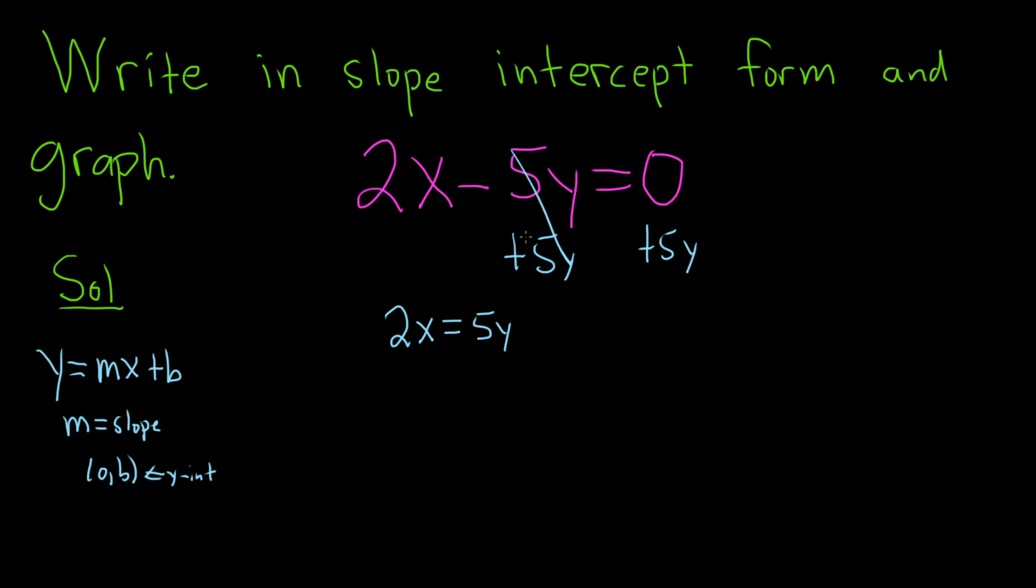We're almost there. We just need to solve for y. Now we can divide by 5. We're dividing because it's being multiplied by 5, the inverse operation. So we have 2x over 5 equals y.